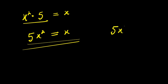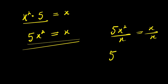We divide both sides: x divided by x is 1. So dividing 5x squared by x gives 5x, and x divided by x is 1. Solving for x, divide both sides by 5.